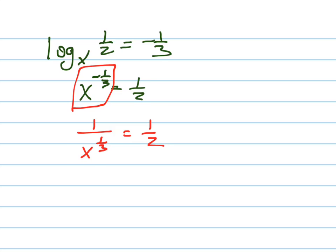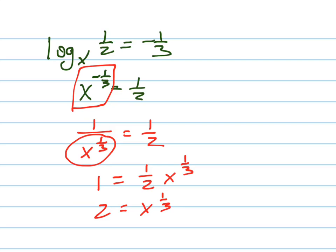Now we have to multiply this to the other side, so one equals one-half times x to the one-third. Now multiply both sides by two, because we're trying to get x by itself. So two equals x to the one-third.